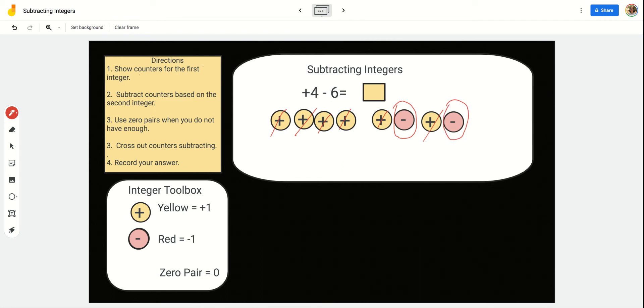And that makes sense. Imagine going to the store with only $4. And you want to buy something that's $6. You might need to borrow from your parent or friend 2 more dollars. So, now you owe 2 dollars. So, our answer is negative 2.